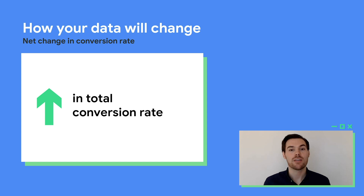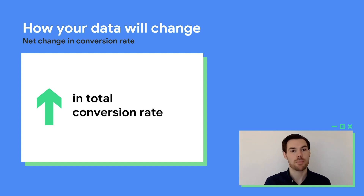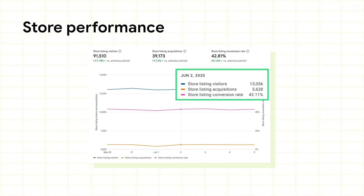Lastly, the store listing conversion rate is the percentage of visitors who became acquired users by clicking the install button on your store listing. For most apps, the rate will be higher than in the classic product, based on the collective changes to visitors and acquisitions. Since all three metrics are related, we visualize them together to give you a better picture of what's going on. For example, if your acquisitions went down because you had fewer visitors, you should try to drive more traffic to your store listing. On the other hand, if acquisitions went down and visitors stayed the same, your store listing has become less effective at getting users to install, and you should update it to improve your conversion rate.